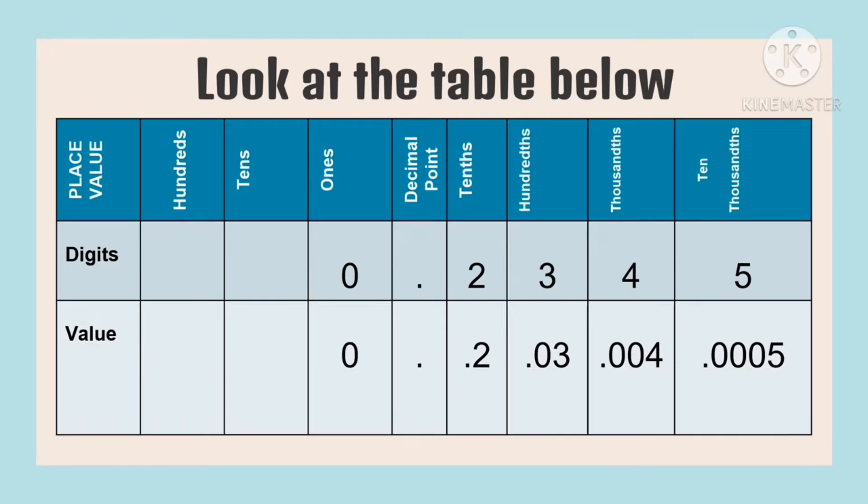Then, what is the value of the digit three? The value of the digit three is three hundredths. Why is there a zero in front? The zero will be the place value holder. Since the place value of three is hundredths, it needs to be in the hundredths place.